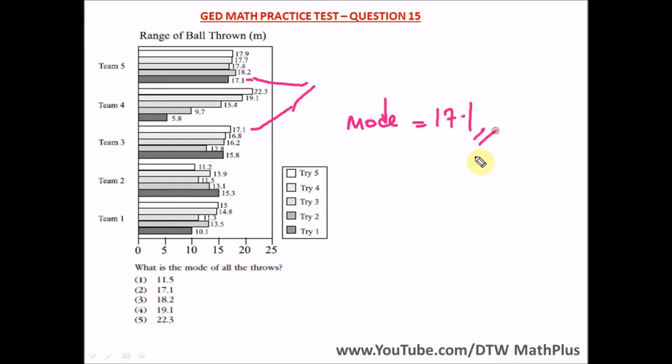This is our mode. You can see with this particular stats and graph we've learned on median, we've learned on mode, and we also learned on range. It's important we know all this when preparing for our GED math test. So the mode for this question is 17.1 and our right option here is option two.